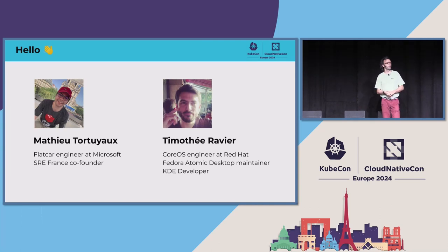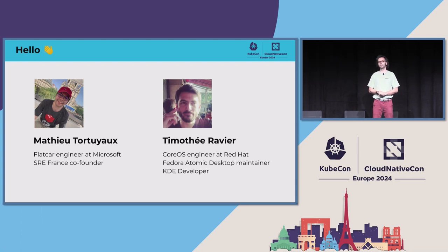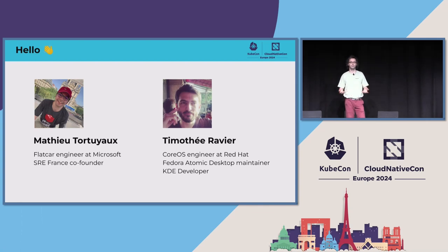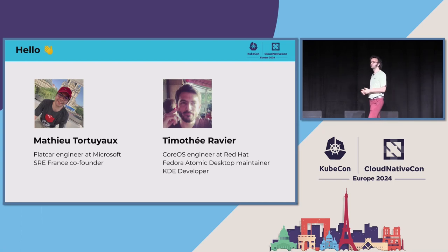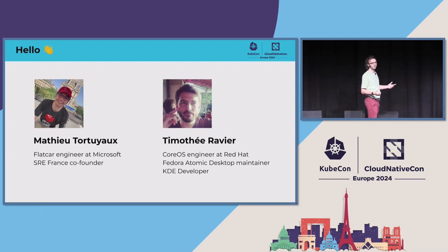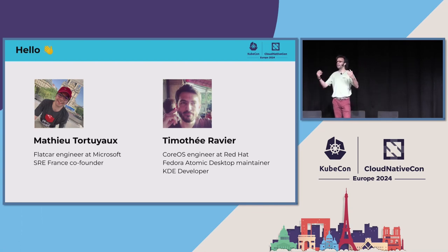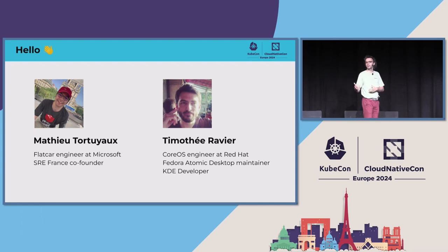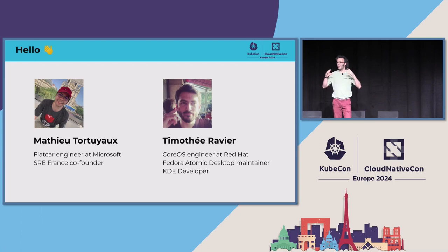Before going further, let me quickly introduce myself. My name is Mathieu. I work as a Flatcar engineer inside Microsoft. I'm mainly involved in the test automation of Flatcar, feature development, and universal topics like Cluster API or upstream contributions to other projects in the Linux ecosystem. Outside of work, I co-founded the SRE France Association, where we organize DevOps and SRE events in France, meetups, and bigger events like the SRE Summer Camp.